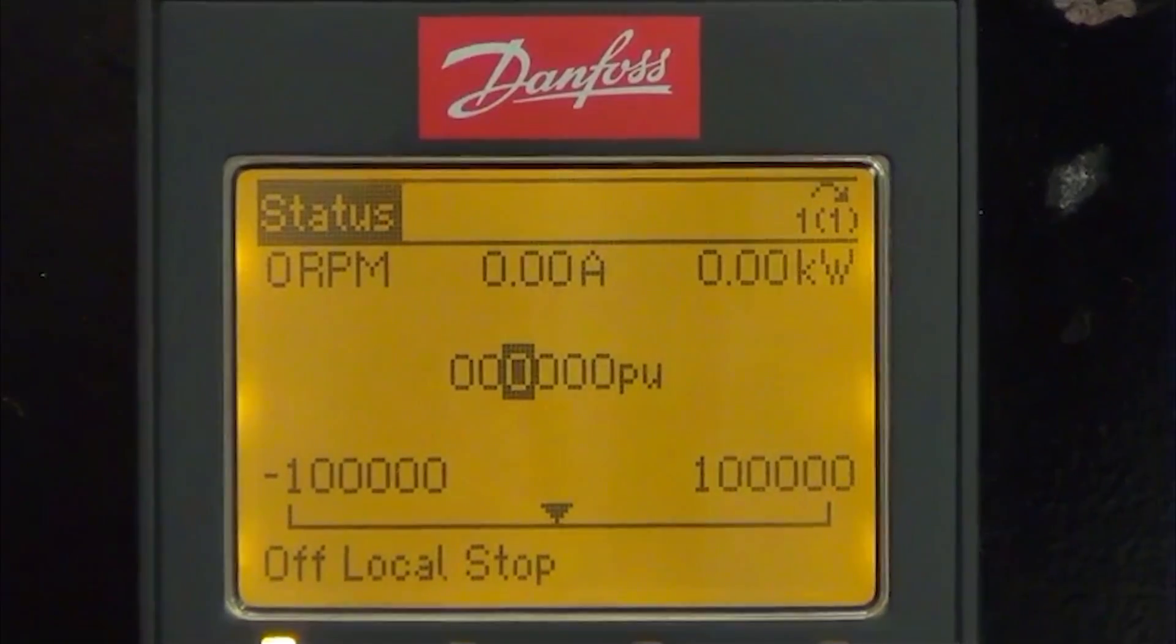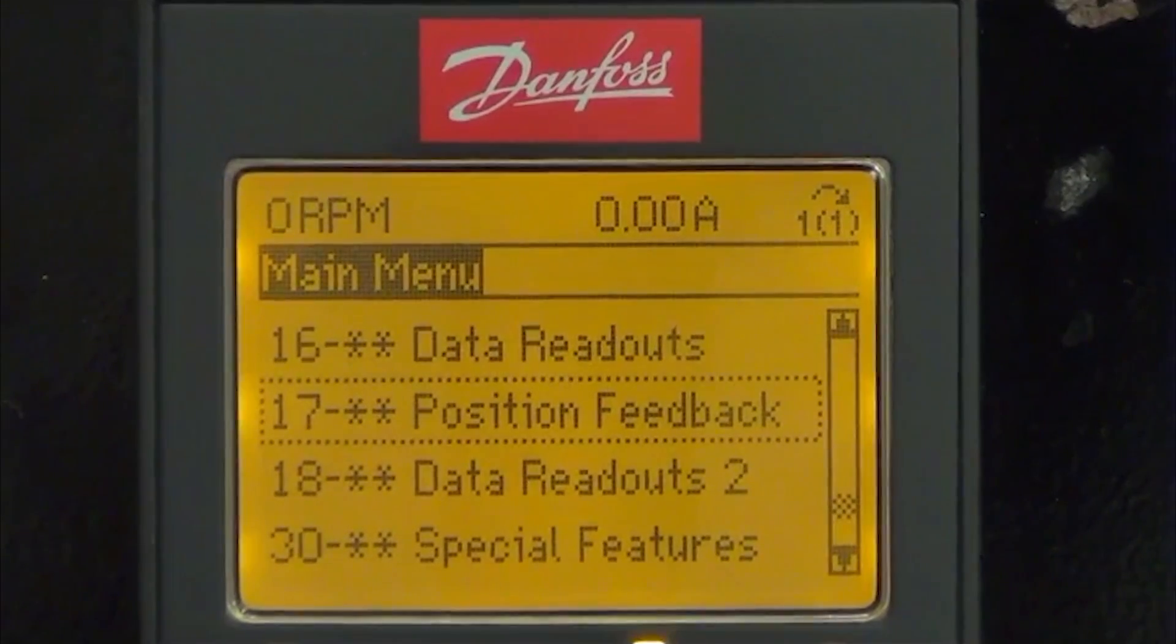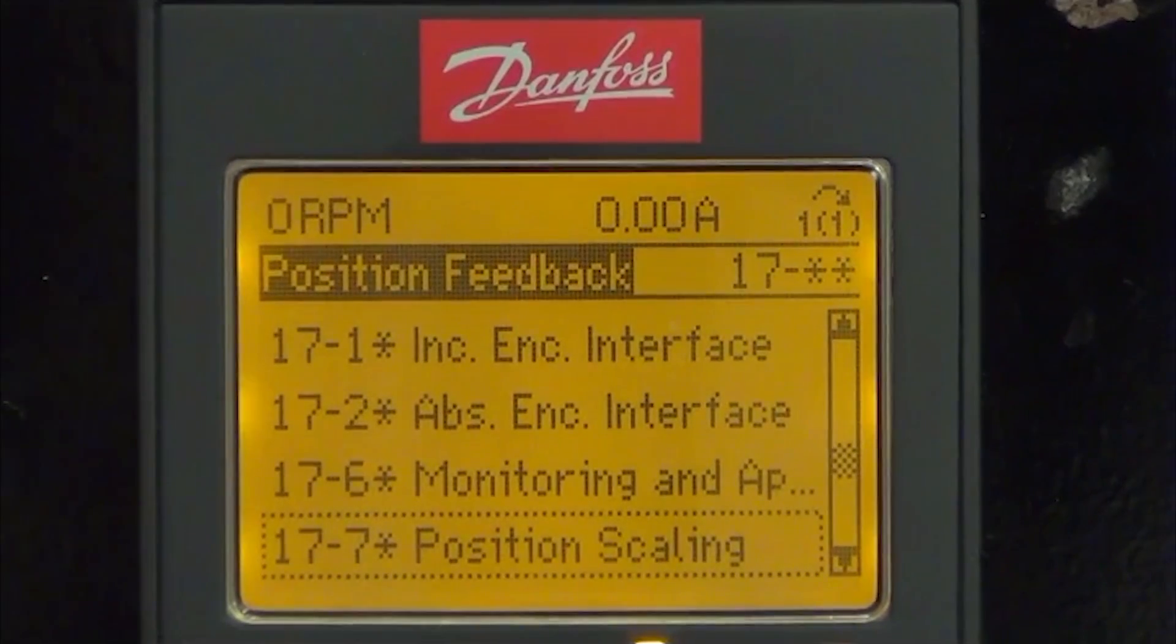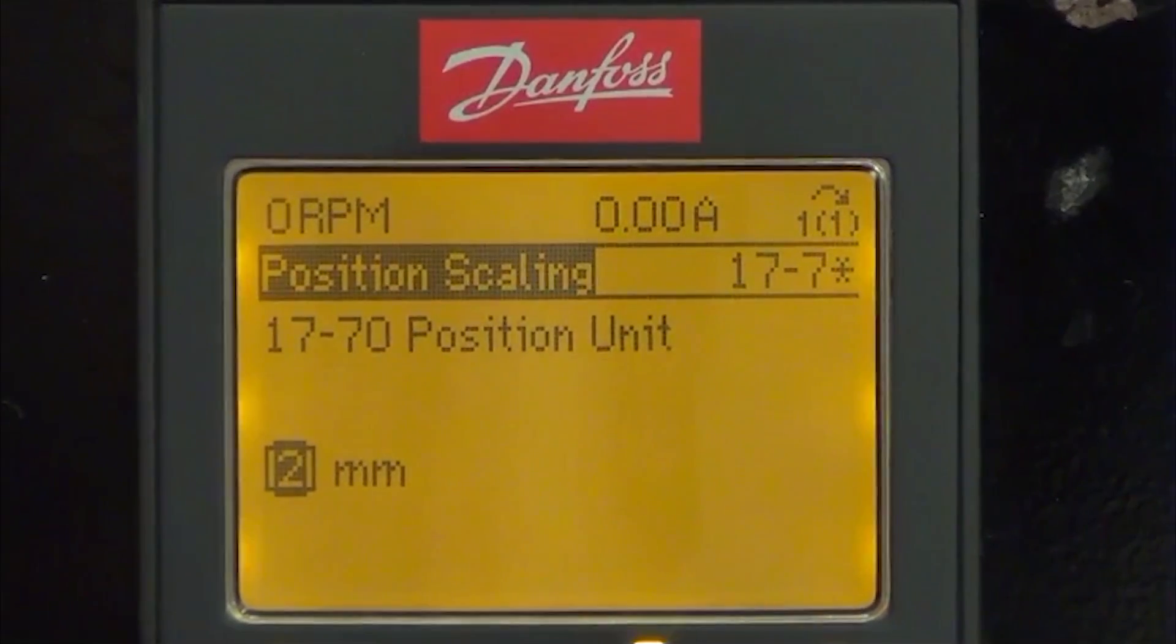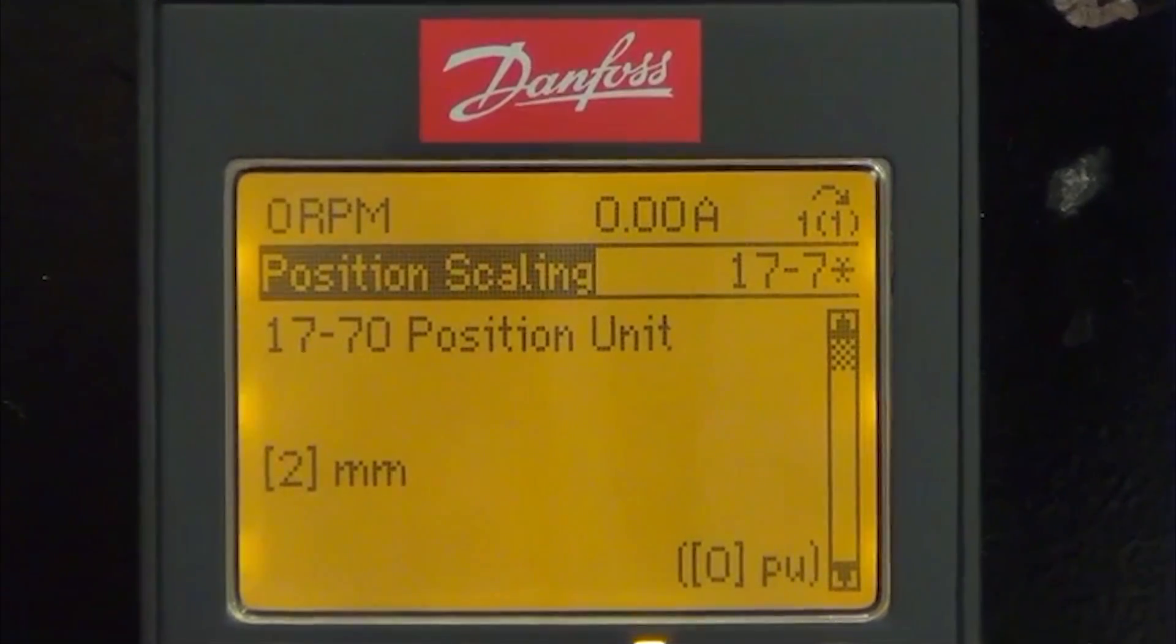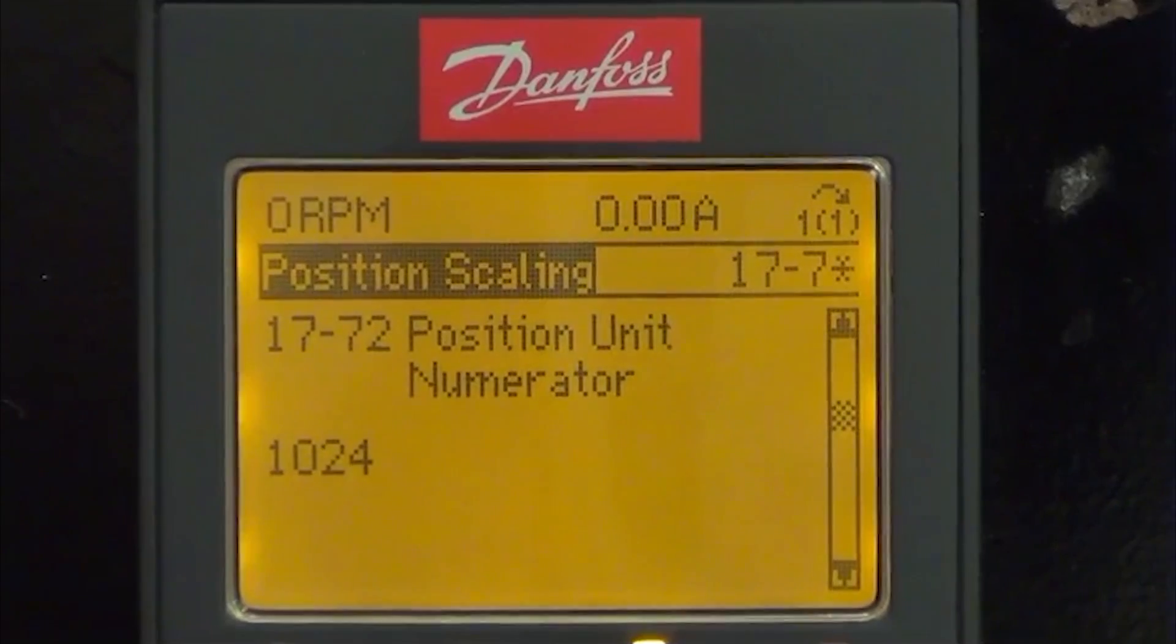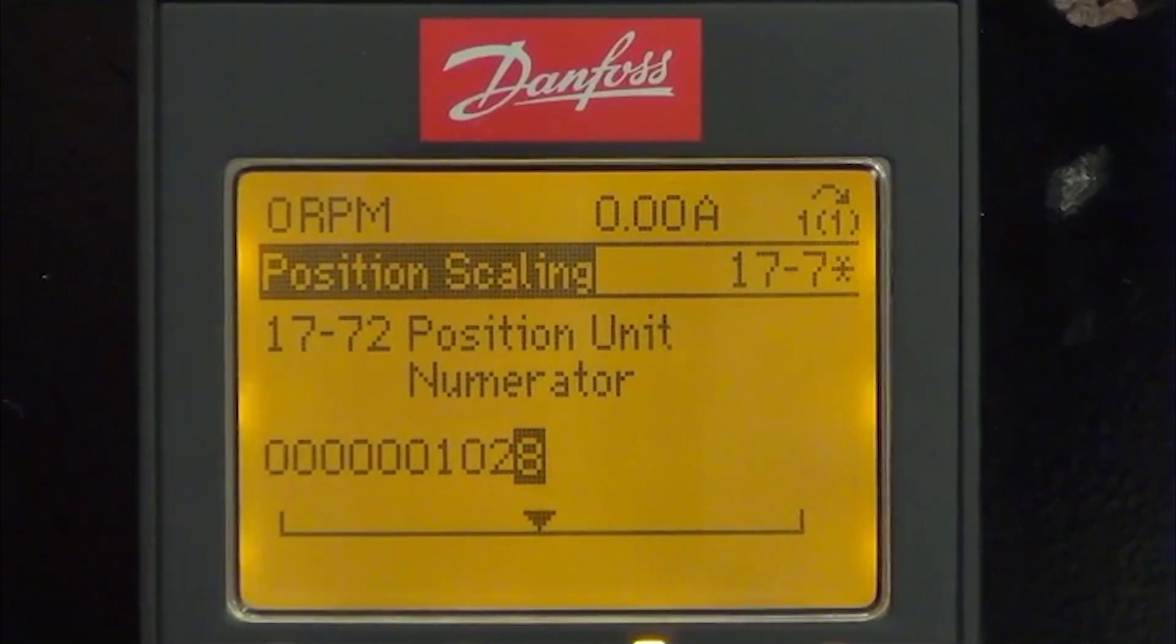Now I will enter the calculated scaling factor in order to do positioning in millimeters. First, we'll go to group 17. And here we have a group called position scaling. First, I will select the unit and we will use millimeters as units. Next step is to enter the scaling factor. As default, it is 1024 positions per revolution. I will change that to 38. That is the factor we calculated.